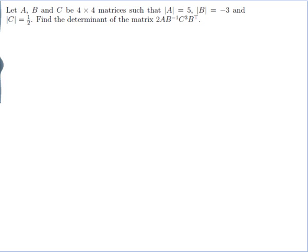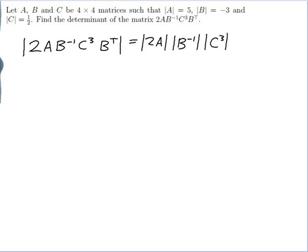Well, we need to find the determinant of 2AB inverse C cubed B transpose. And the rules of determinants say that I can do each of those determinants separately like this: the determinant of 2A times the determinant of B inverse times the determinant of C cubed times the determinant of B transpose.